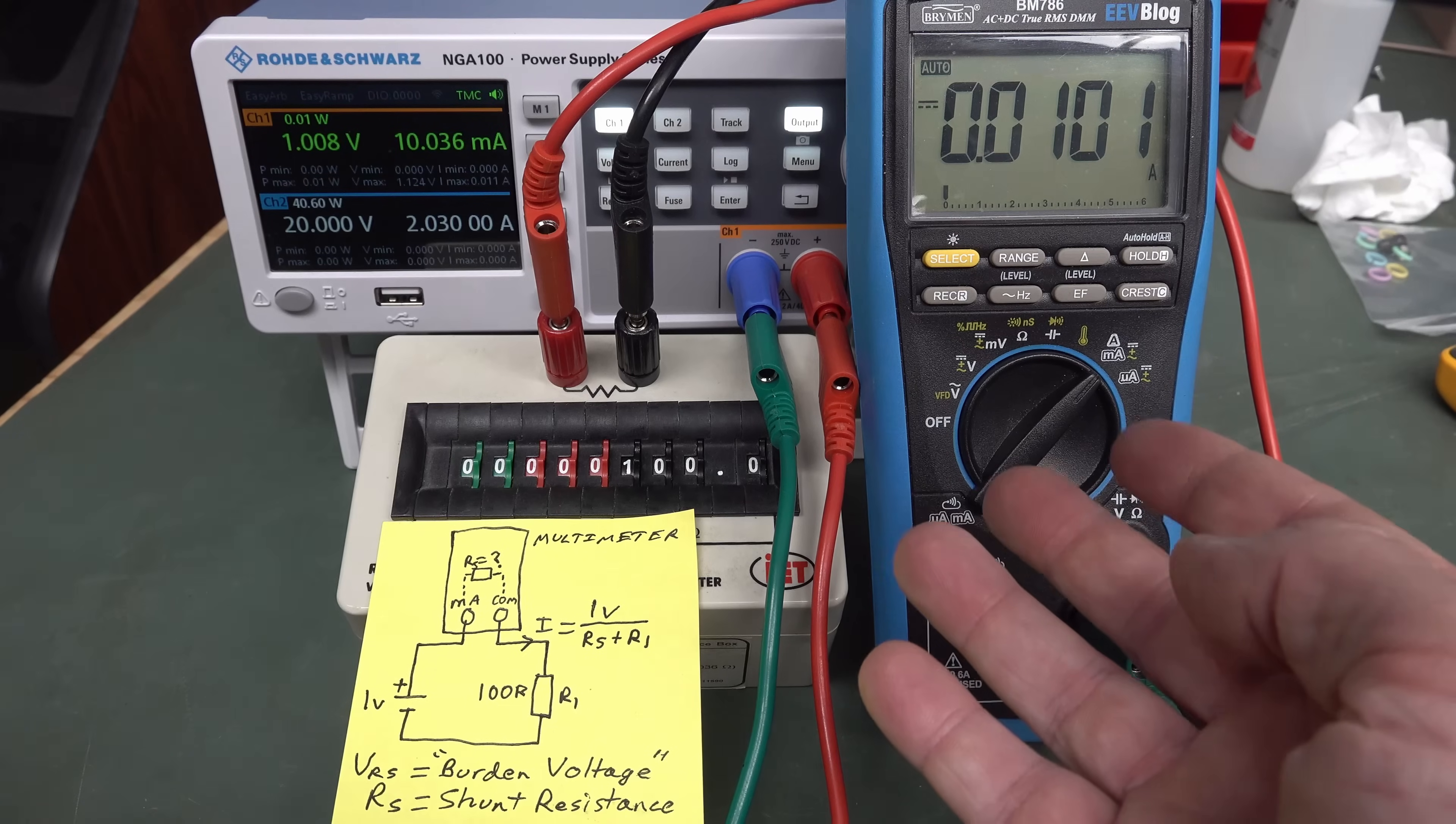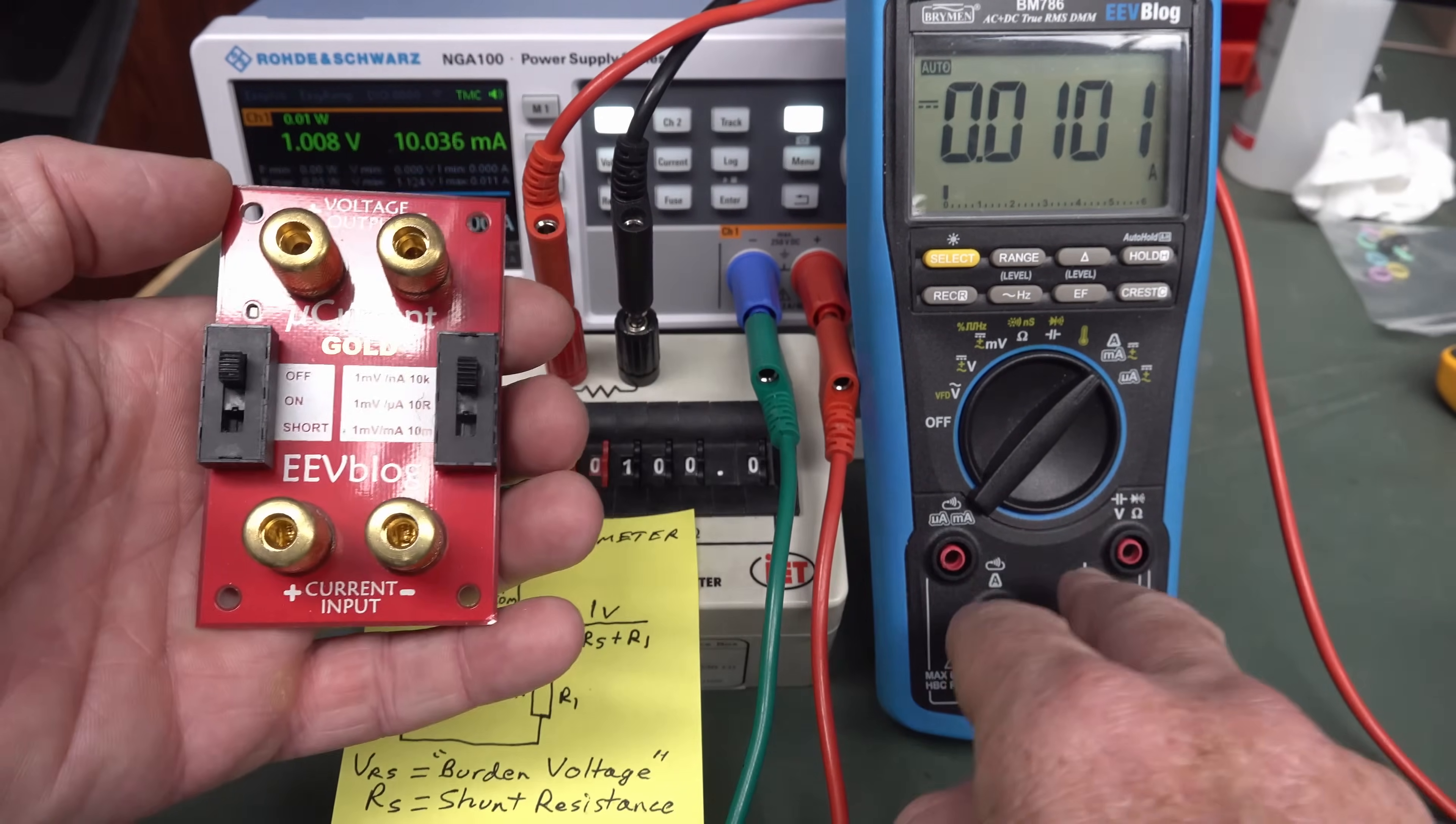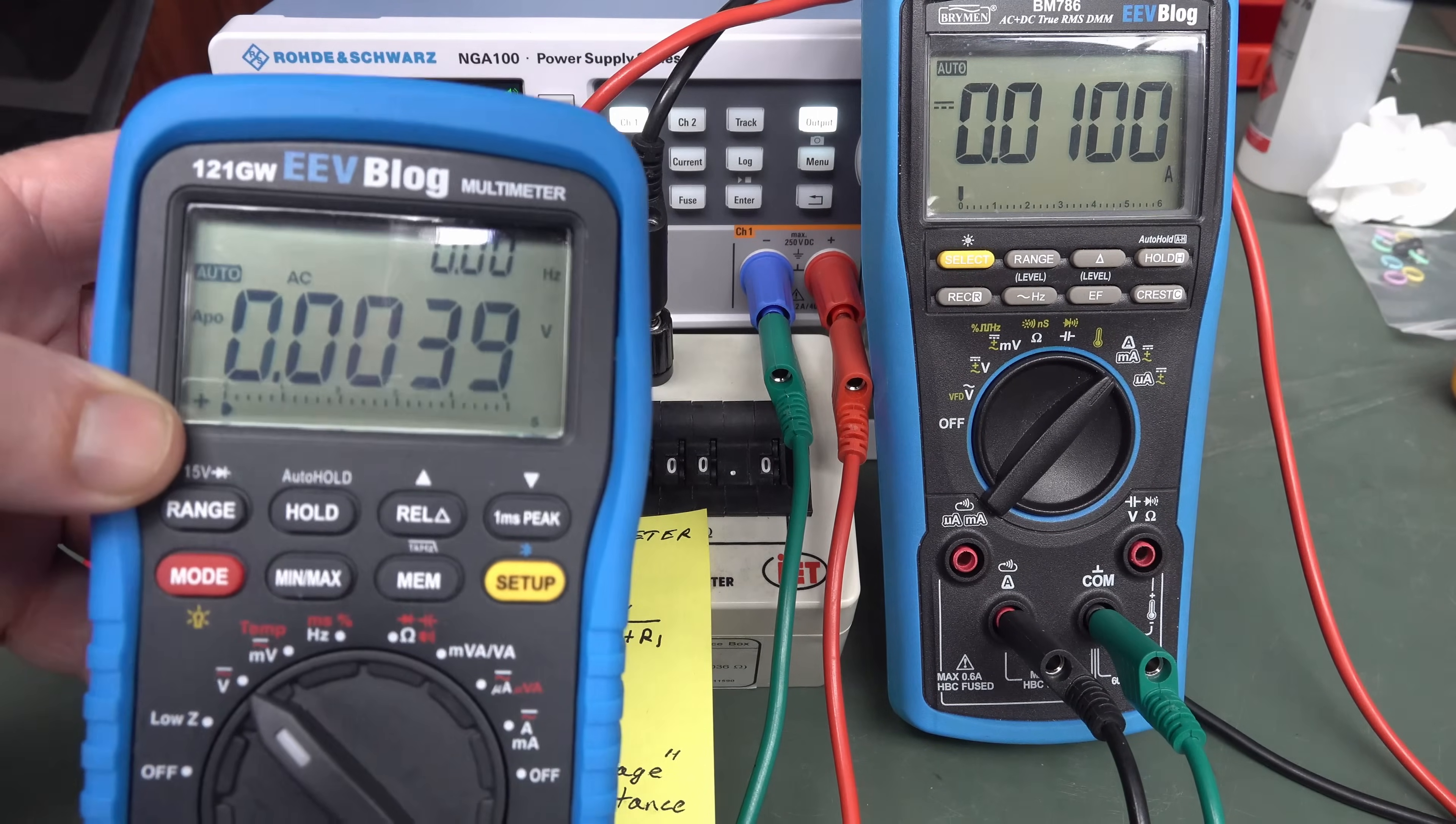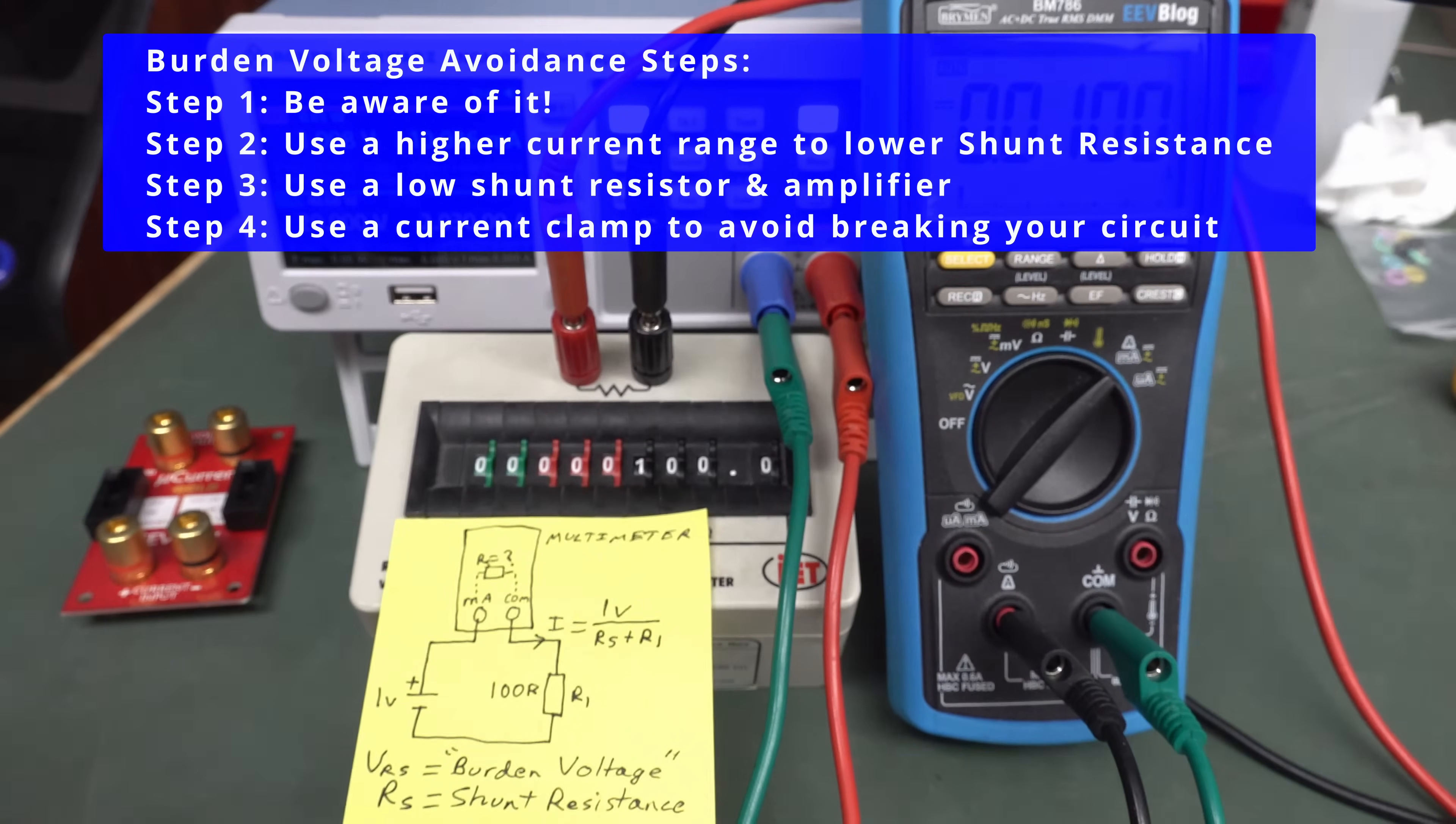And this problem with burden voltage in the multimeter, which as I said, can be like up to a volt or something like that, 700 millivolts to a volt at full-scale reading. And it's going to change depending on your current through there, by the way. It's why I developed the microcurrent. It's basically got, it's still the same, it's a shunt resistor, but it's got a times 100 amplifier in there. So in theory, the shunt resistance is a hundred times lower, but it's still not zero. And that's why I also built that into my 121 GW multimeter here. I think it's the only meter on the market that has a low burden voltage. It's basically got a microcurrent built in, the little amplifier. But even with this meter, the burden voltage is still not zero. It's just lower than a regular multimeter.